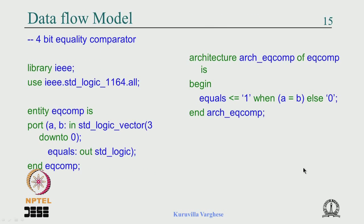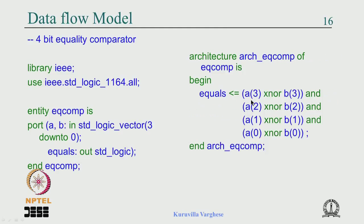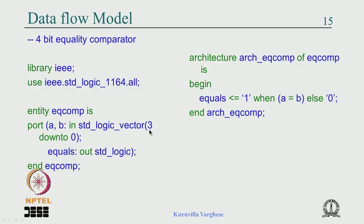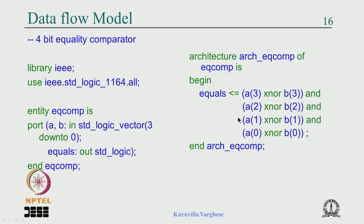We have seen the data flow model. The first example is a data flow model showing how the input flows and the output gets assigned. It uses a construct called the when-else statement used in the concurrent body. Everything in the architecture statement region is concurrent. Using logical operators makes the code very concise regardless of whether the data size is 3 or 31 bits, and the synthesis tool implements the equivalent circuit optimally.